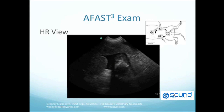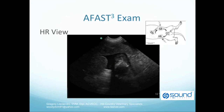On the HR view shown here, there is obvious free abdominal fluid recognized by black triangles or anechoic triangles with sharp angles right in the middle of this image. Such angles are not representative of any normal intra-abdominal structures. The HR view is nicknamed the home run view because it finishes the AFAST exam and is an appropriate site to perform abdominocentesis. It should be noted that ultrasound cannot characterize fluid, which can only be accomplished by abdominocentesis with fluid analysis and cytology.